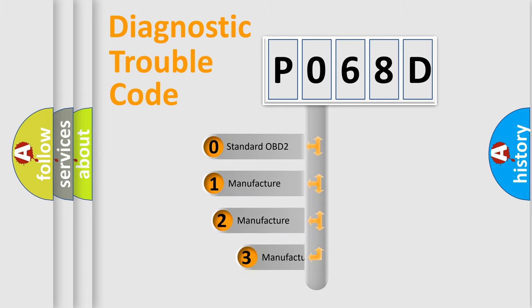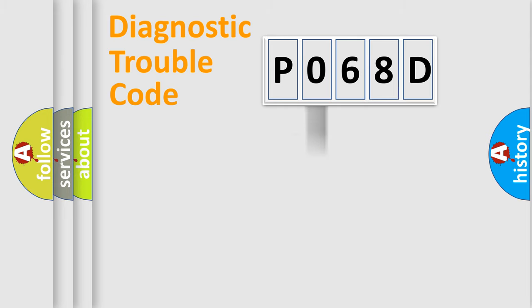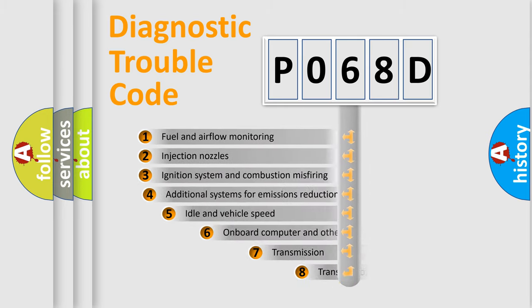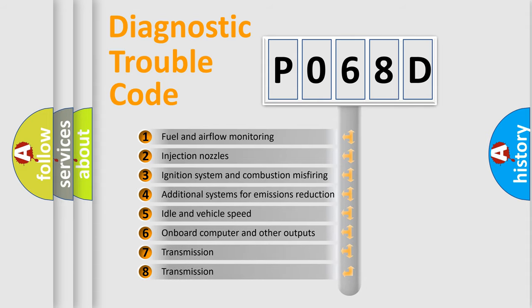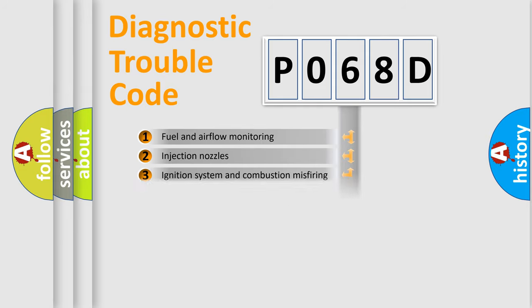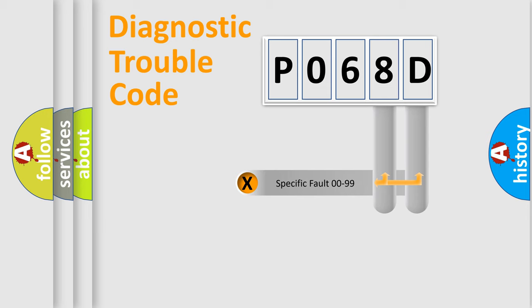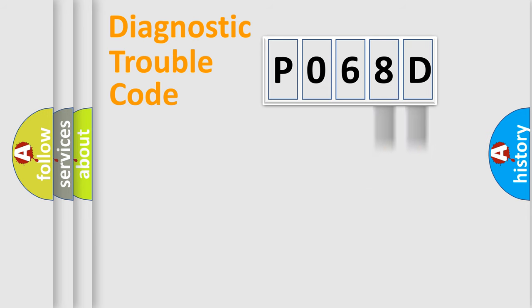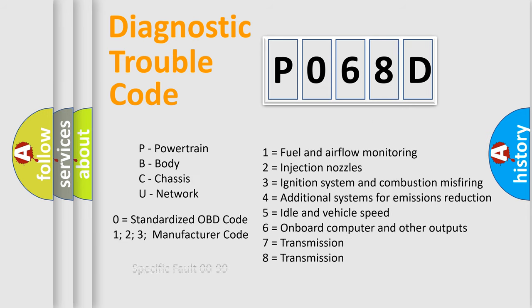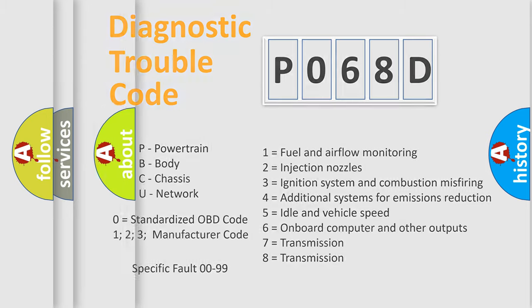If the second character is expressed as zero, it is a standardized error. In the case of numbers 1, 2, or 3, it is a manufacturer-specific error expression. The third character specifies a subset of errors. This division is valid only for the standardized DTC code, and only the last two characters define the specific fault of the group.